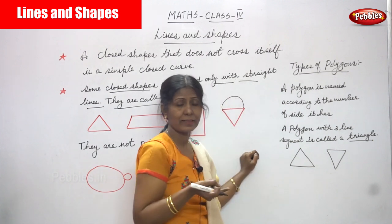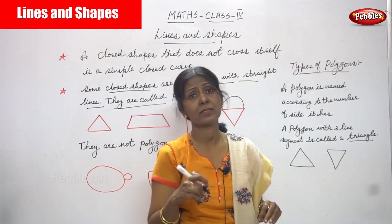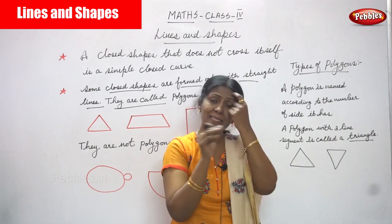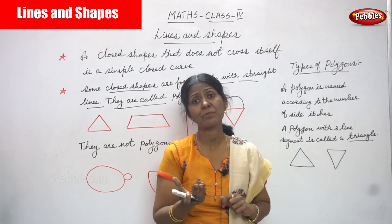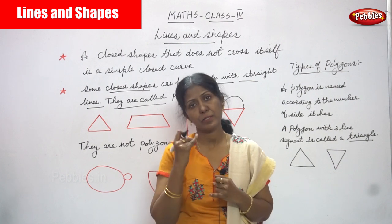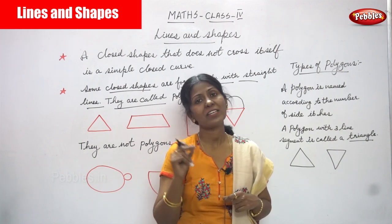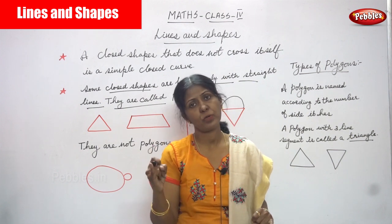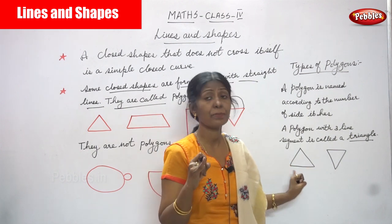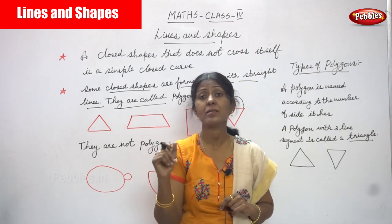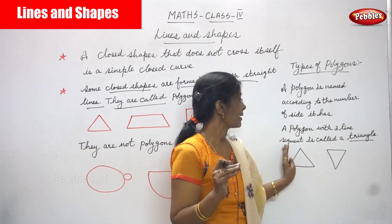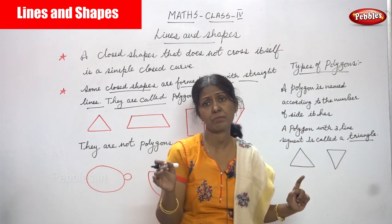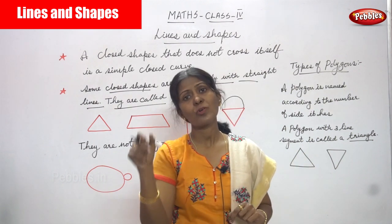Next we are going to see quadrilateral. Three line segments forming a figure is called a triangle, which is a type of polygon. A quadrilateral has four line segments — four straight lines form a figure and it is called a quadrilateral.